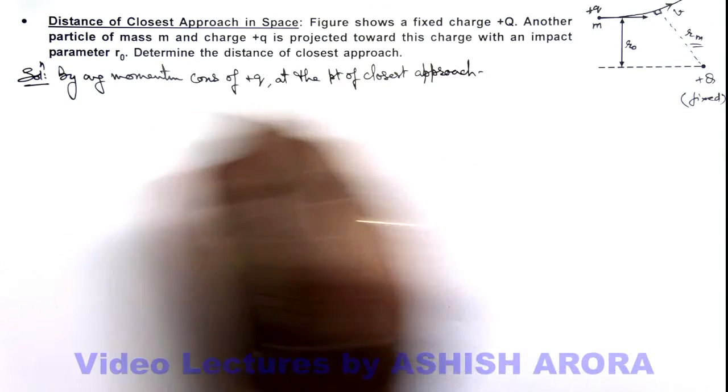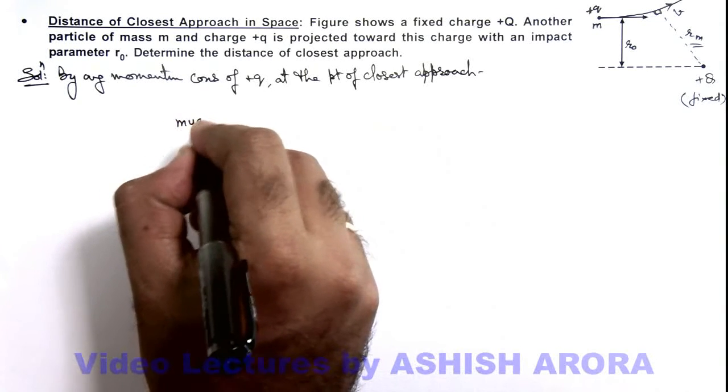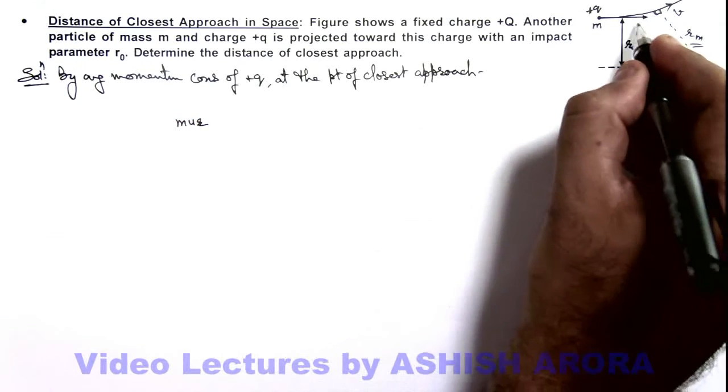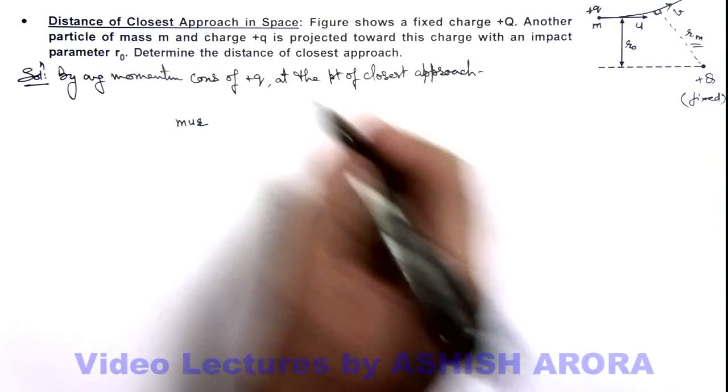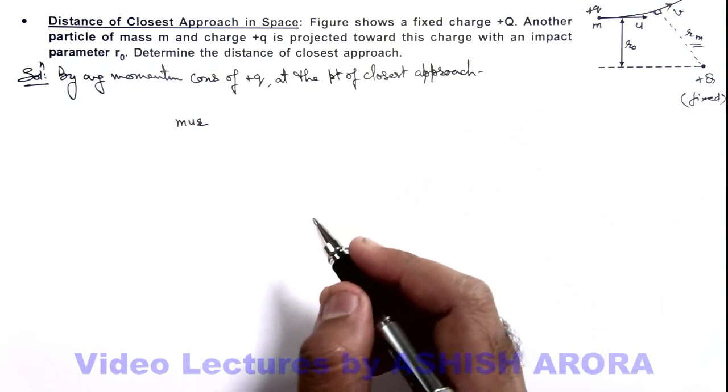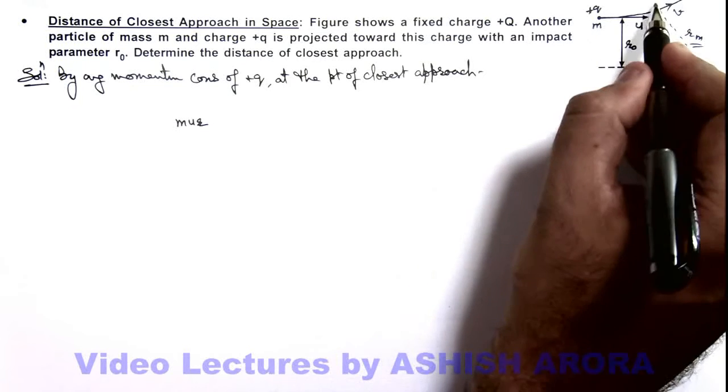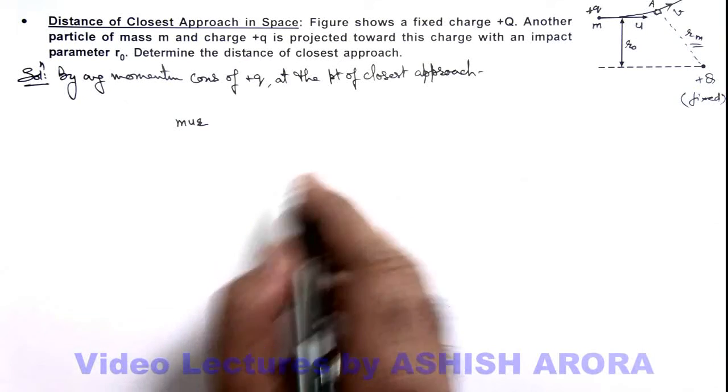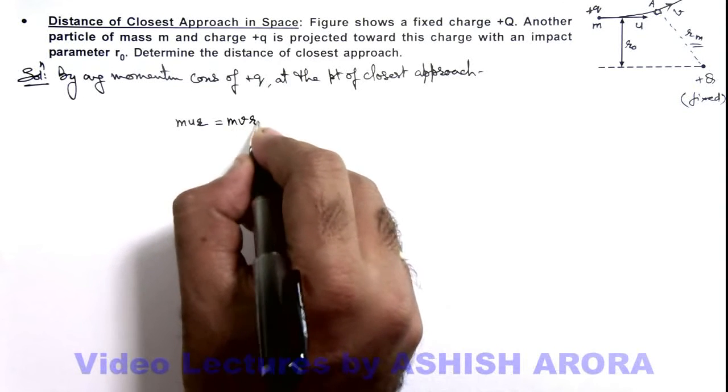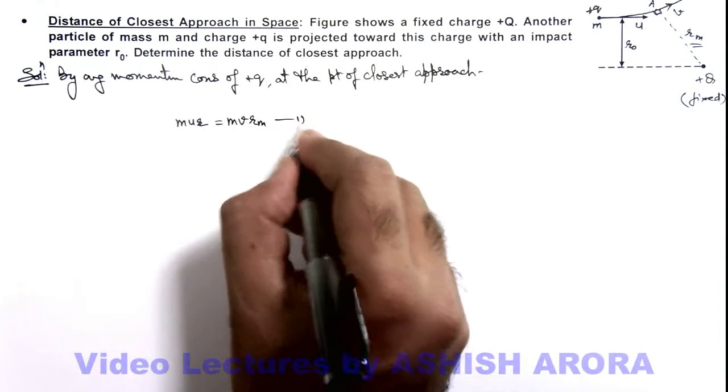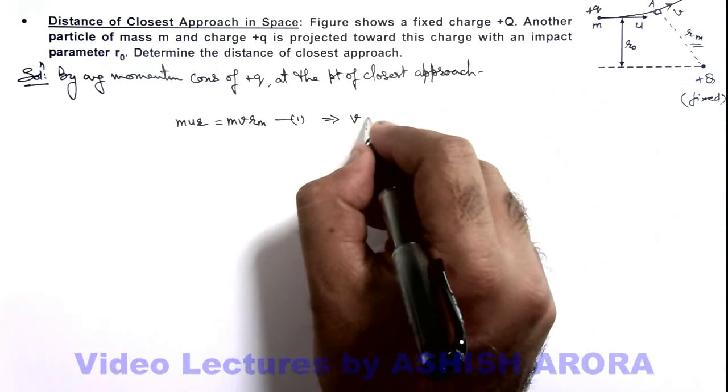we can write its initial angular momentum was mu·r₀, where u is the initial speed for the particle in the initial state given to us. At the distance of closest approach, if this is v, we can write this is equal to mv·rₘ. So this is our equation 1, which will give us the value of the speed of particle at the closest approach point,